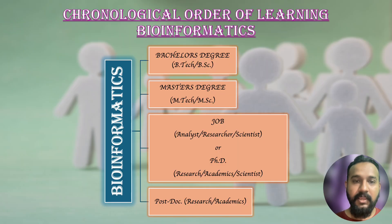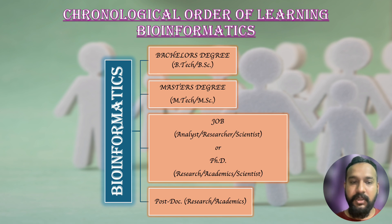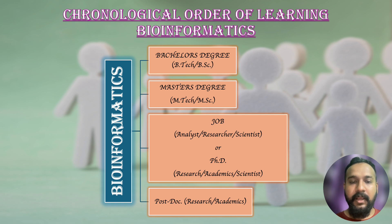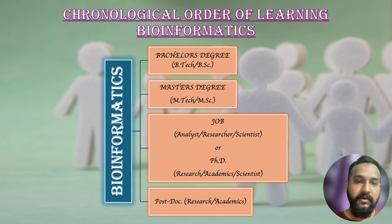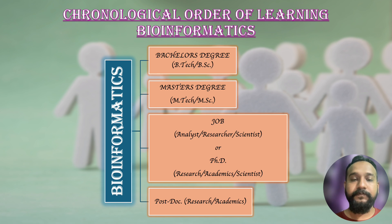The first and foremost thing is to choose a good college or a degree for bioinformatics. Before choosing a college, you should have prior knowledge about what degrees are provided in this field and up to what level you should study. The bachelor's degree in bioinformatics ranges from BTech to BSc — that is Bachelor of Technology and Bachelor of Sciences. You can choose either of them depending on your interest.